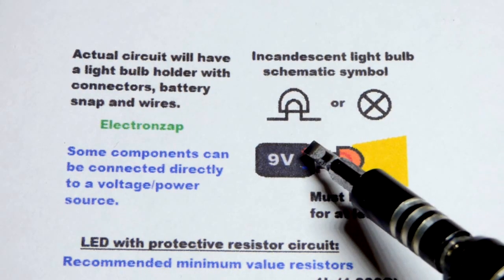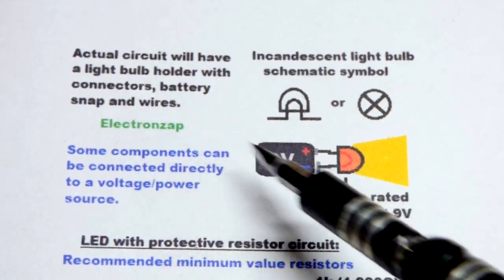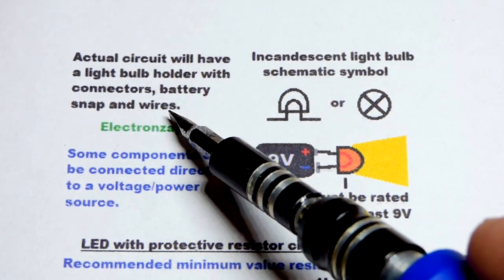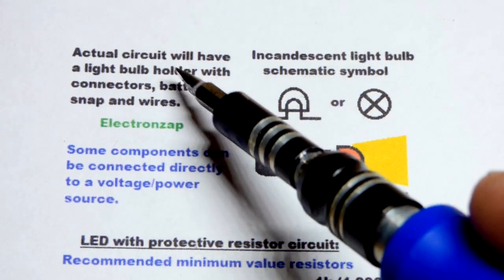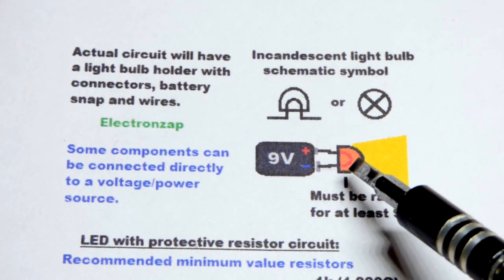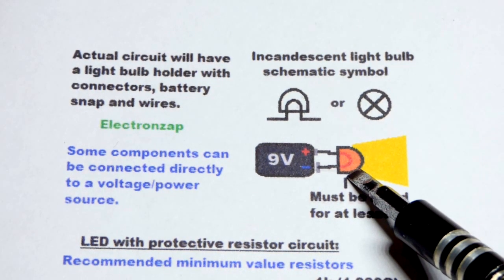Not literally directly to a battery—usually you'd have a light bulb holder. For a 9-volt battery, you'd have the battery snap with wires, and then there'd be connectors to connect those wires to the holder. The holder probably already has those connectors. In any case, you can power the light bulb directly from a 9-volt battery.